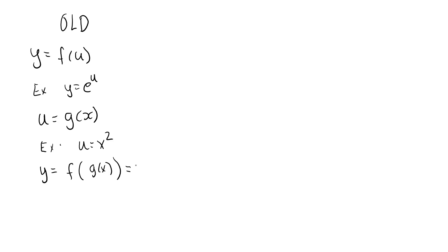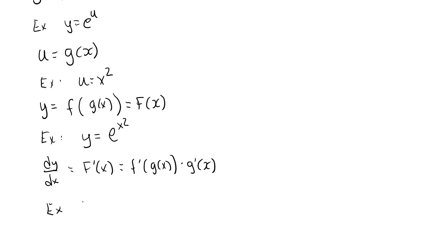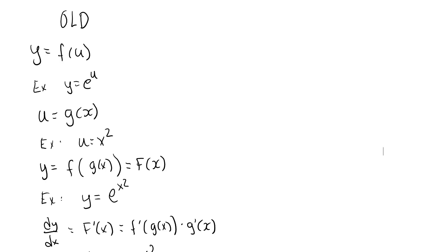I want to use h for a different purpose in this lecture, so let's denote it by capital F of x. In my example, the composite function is y equal to e to the u, and u is x squared. f is called the outer function and g is called the inner function, while capital F is called the composite function. The chain rule for composite functions tells us that dy/dx, which is the same thing as the derivative of capital F, is given by the product of the derivative of the outer function, f prime of g of x, multiplied by the inner derivative g prime of x. In our example, dy/dx equals the derivative of e to the u, which is e to the u — then replace u with x squared — times the derivative of x squared, which is 2x.